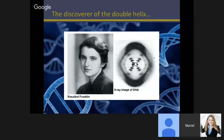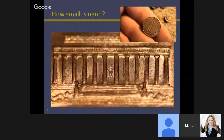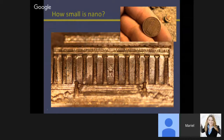My favorite way of thinking about how small nano is: take a penny with the Lincoln Memorial on the back. Many people don't know that in the center you can actually see a tiny picture of Lincoln sitting in his chair. If you zoom in to one of his eyelashes, that eyelash would be 10,000 nanometers wide. So that gives you an idea of just how small we're talking.